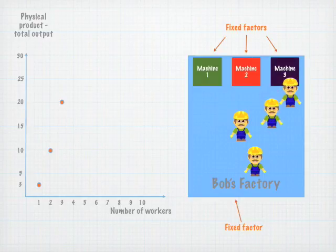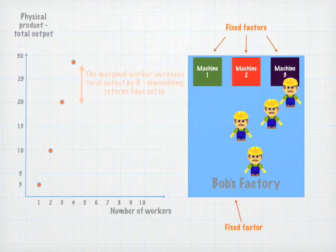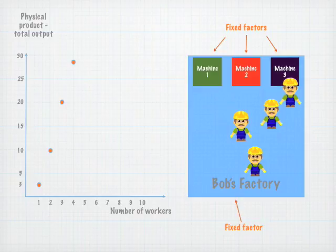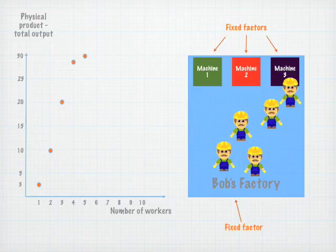The addition of the fourth worker also leads to an increase in output, this time to twenty-eight. However, this increase in output is less than that of the third worker, and it's at this point that diminishing marginal returns are said to have set in. The fifth worker adds only two to total output — perhaps workers are having to wait for machines, a bit of congestion, and generally a little inefficiency entering into the business.